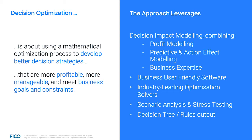What we're leveraging is what we call decision impact modeling, which combines profit modeling, prediction and action effect modeling, and business expertise. As FICO, we provide our customers with business user-friendly software that includes an industry-leading optimization solver for solving optimization problems, as well as a wide range of tools for scenario analysis and stress testing. The decision strategies are operationalized via a decision tree or rules output.